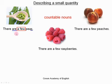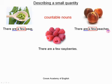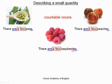The verb must also be in the plural form, so we say 'there are.' It is the same with peaches: 'there are a few peaches' — a countable noun in the plural, so we add an S or ES for peaches, and the verb is also in the plural form. And finally, it is the same with raspberries. We put the noun in the plural form — for raspberry, that means adding IES. We say 'a few' because it is a countable noun, and the verb is also in the plural form: 'there are.'